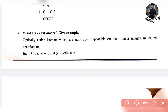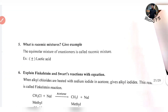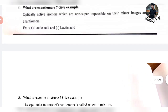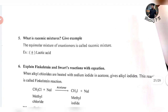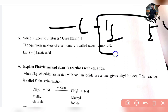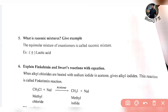It means lactic acid — then positive and negative. Positive lactic acid and negative lactic acid. That is an example of enantiomers. The equimolar mixture of enantiomers is called a racemic mixture. So positive and negative lactic acid — that is an example of a racemic mixture.